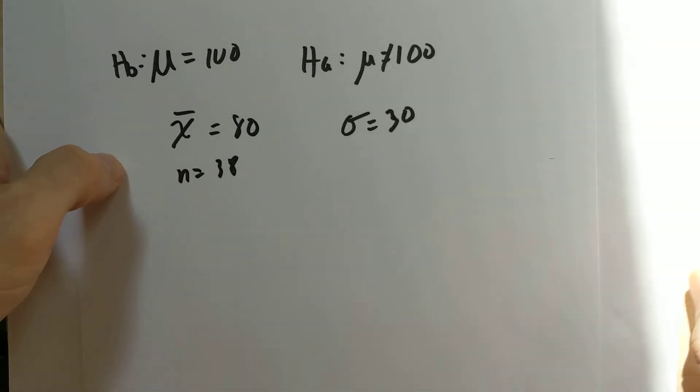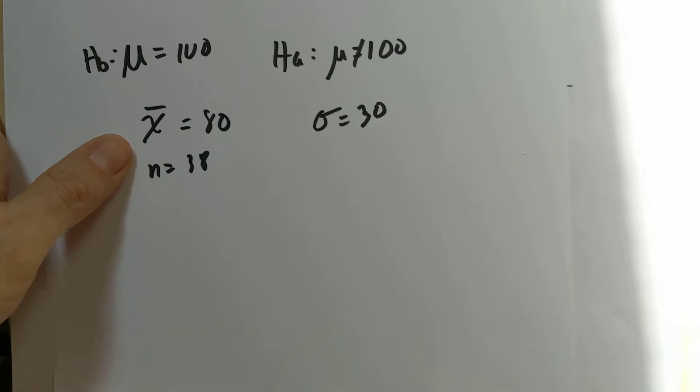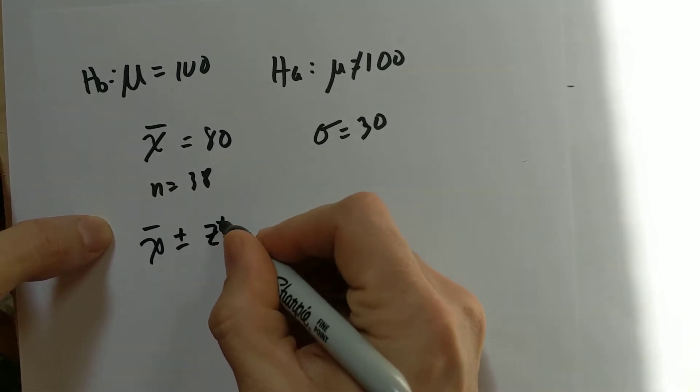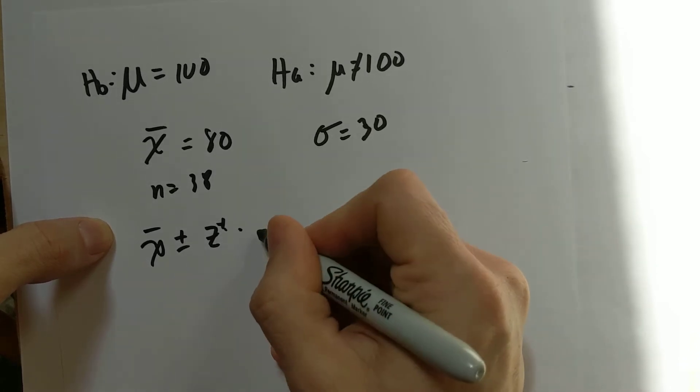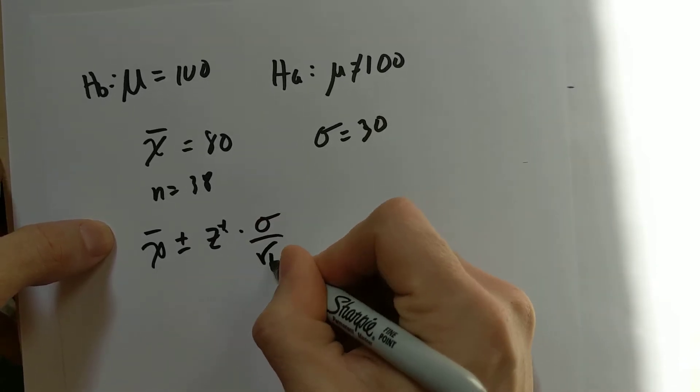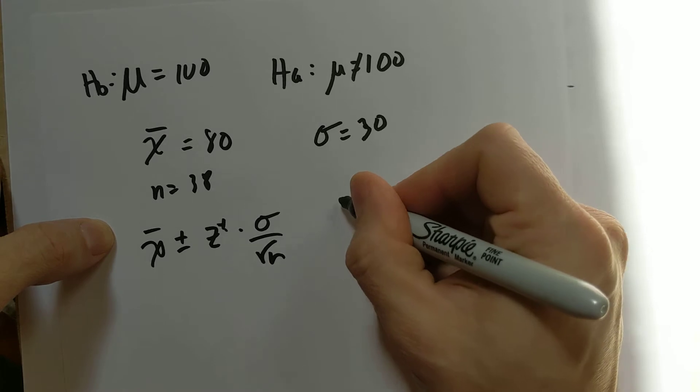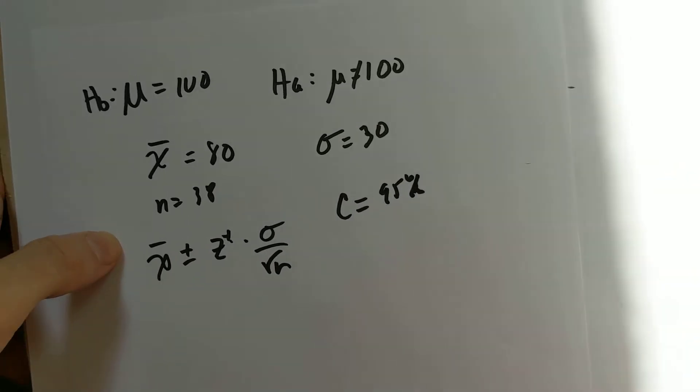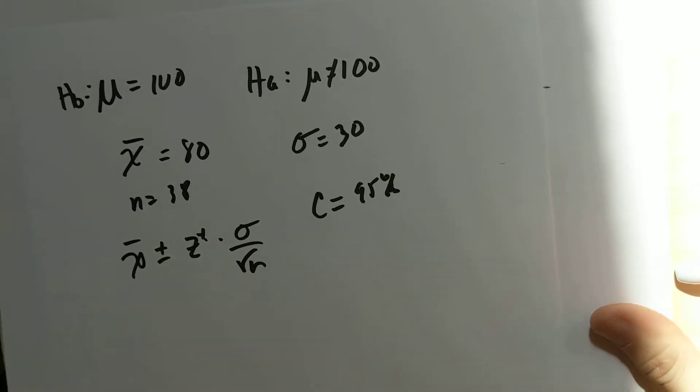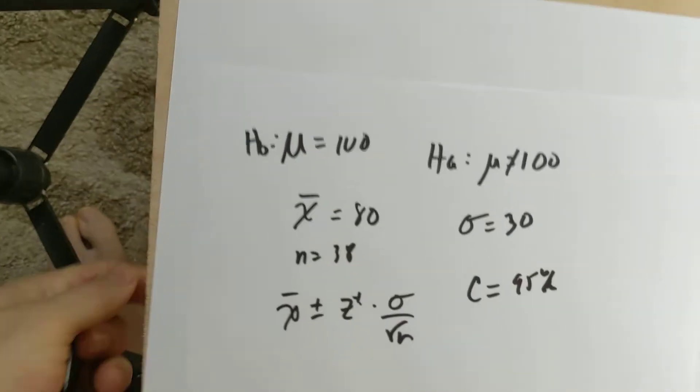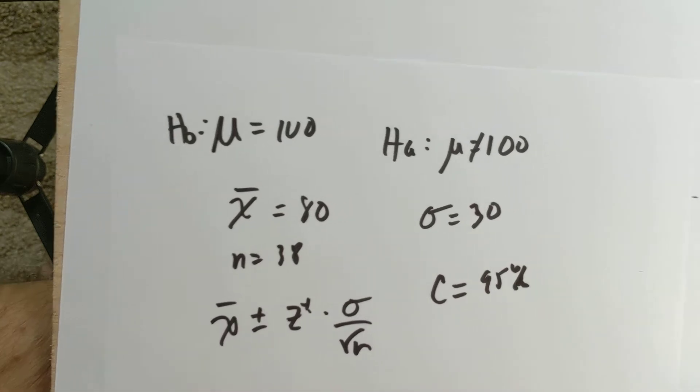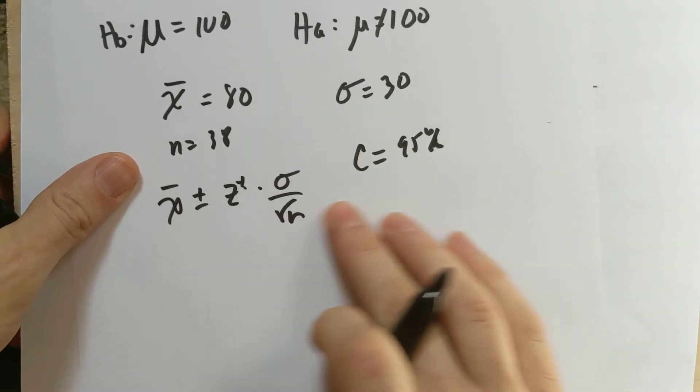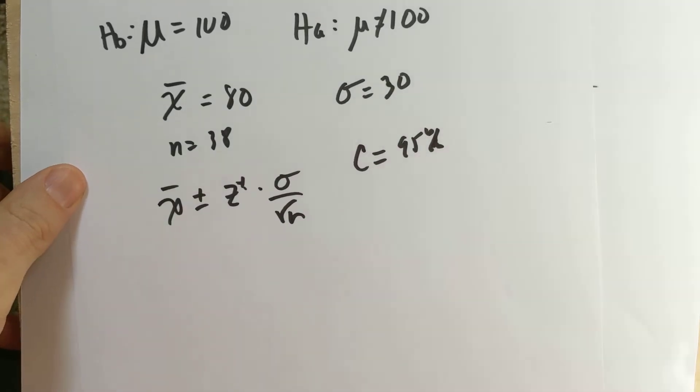If I was creating a confidence interval, then my confidence interval would be x-bar plus or minus z-score for some level of confidence times the standard deviation of the population divided by root n. Let's say we did a level of confidence that was 95%. I got some sun glare coming in here. I'm going to have to move the camera over just a little bit.